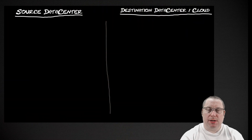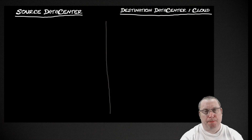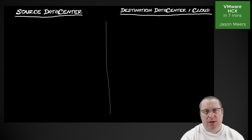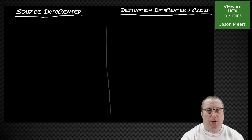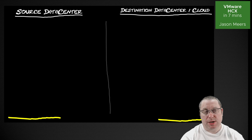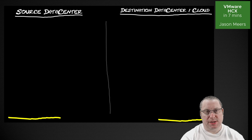Hi, I'm Jason Mears. This is a quick introduction to HCX. In the diagram behind me, we've got two data centers: the source data center on the left and the destination data center or destination cloud on the right. At the bottom of the diagram, I've got two separate networks indicated by those two yellow lines — two different sets of IP addresses and ranges.